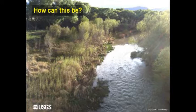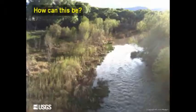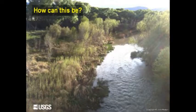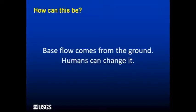If you thought or said the ground, that's a very good answer. This water in this picture here is coming from the ground, and we call this kind of water, when there's no rain or snow melt to obviously explain its existence, we call this baseflow. Baseflow comes from the ground, and humans can change it. Humans can change it. What do I mean by that?